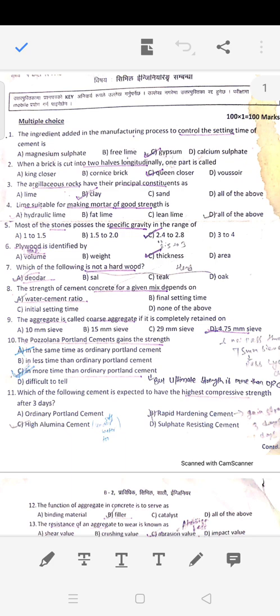When a brick is cut into two halves lengthwise, one part is called queen closure. The argillaceous rock or principal constituent of clay is alumina.